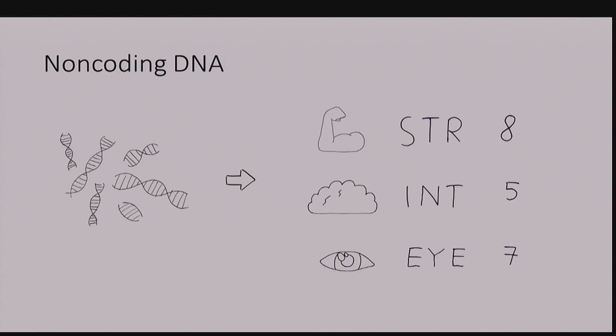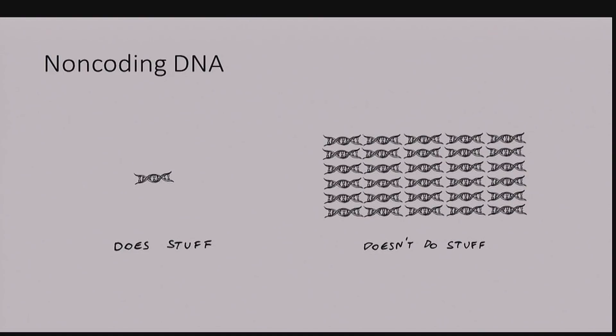We like to think of DNA as encoding for characteristics like strength, intelligence or eye color. But in reality, this kind of DNA is massively in the minority. Almost all of the human genome is made up of non-coding DNA. But you know this already because you listen to Kat. But if you're joining us just now on YouTube, I'm blowing your mind here.